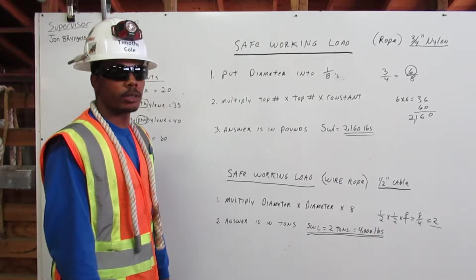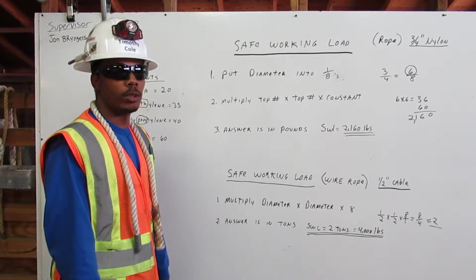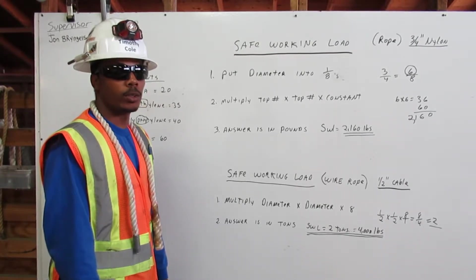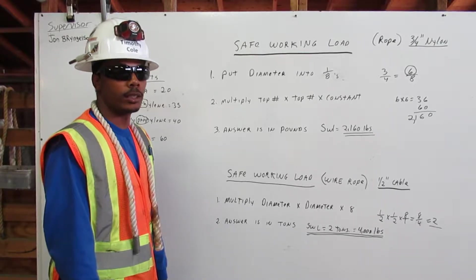I am going to explain how to calculate the safe working load for rope and wire rope rigging. This safe working load is a number that represents one-fifth of the rigging capacity. Let me explain.